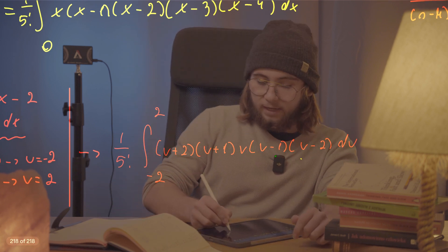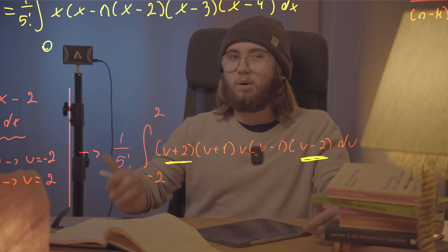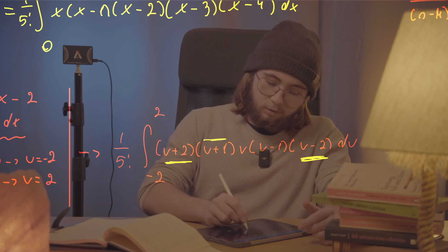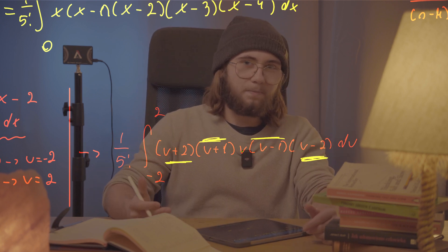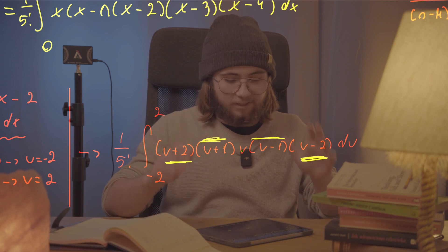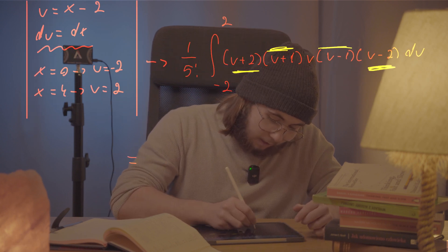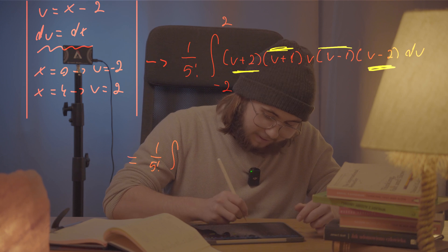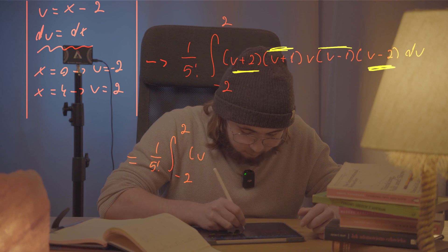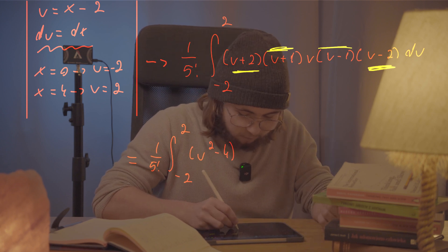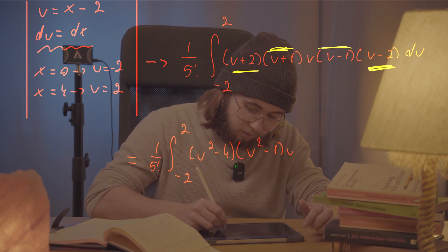But now, you see, this u minus two and this u plus two, well, these two combined, these two multiplied together, are gonna just give us difference of squares. This u plus one and this u minus one are gonna give us also a difference of squares, u squared minus one. Lovely, because it is getting simpler and simpler and simpler to multiply this stuff out. And so now, I'd like to just rewrite it as one over five factorial of the integral from negative two up to two of just u squared minus four, that's u plus two times u minus two, times u squared minus one, that's u plus one times u minus one, that's all times u du.